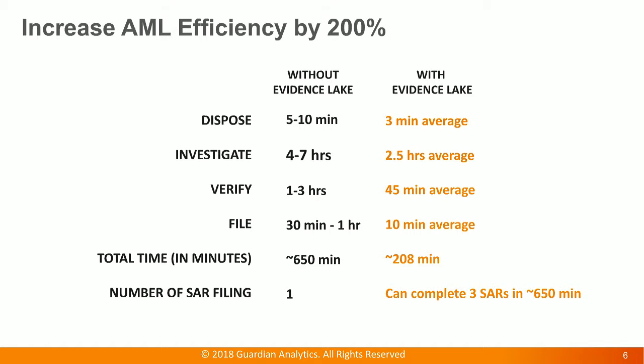You can see that the time to investigate is usually four to seven hours. This is the point where we believe we can make tremendous efficiency increases. We want to bring it back to about 2.5 hours on average. We are also making progress in other areas like time to verify and time to dispose, and with the number of alerts, it does start to count. So if we can bring efficiency so that you can complete three SARs in about eight to ten hours — about 50 to 60 minutes each — that is a tremendous increase in efficiency.